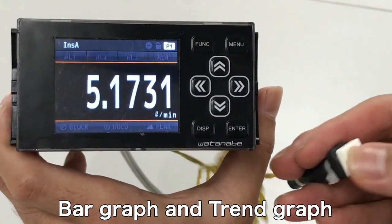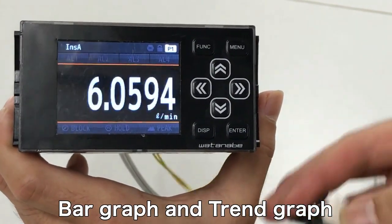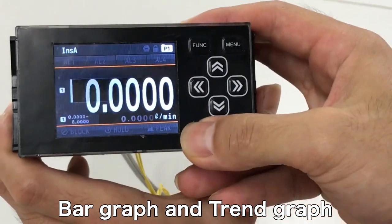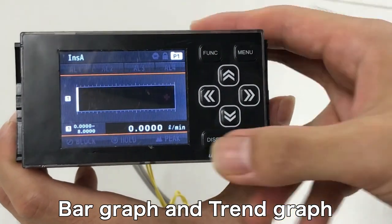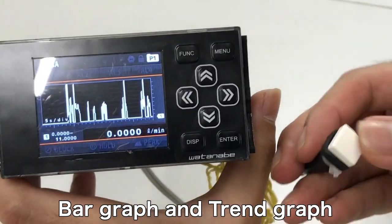WPMZ is a pulse input type. With only one button push, you can see bar graph like this. And also you can see trend graph like this.